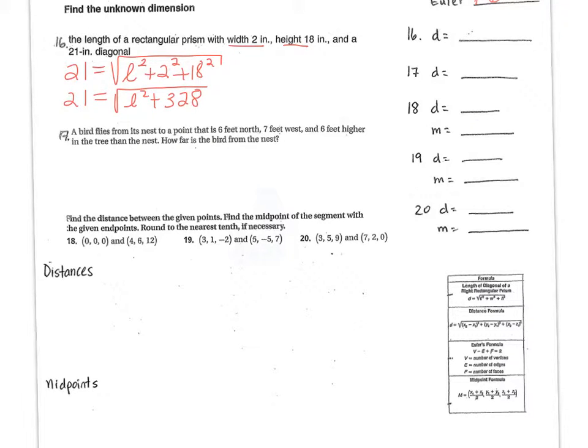And then we get the square root, right? Get rid of the square root. How do we do that? We square both sides. So 21 squared, that's 441. Thank you, Amy. 441, that equals to L squared plus 328.